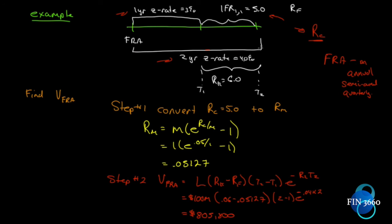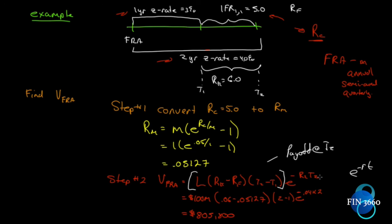Now we're ready to value the FRA using the standard formula, where RF is the annual compounding of the forward rate, not the continuous rate. R2 is the zero rate for the term up to T2. This first term is the payoff at T2, and we discount it back to the present using the observable spot rate of four percent: e to the negative 0.04 times two. Think of it as a crime scene — find the clues and solve it. The answer: eight hundred and five thousand eight hundred dollars.